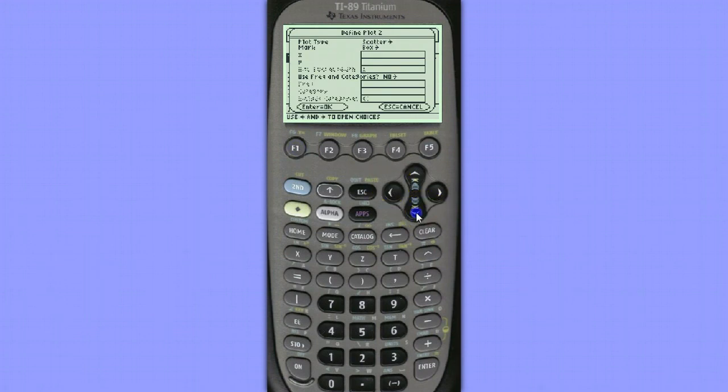We're going to be creating a scatter plot. A residual plot is a scatter plot of the residuals. Our x's are in list 1. I have to make sure I hit alpha to get the alphabetic characters off these keys as I'm pressing them.